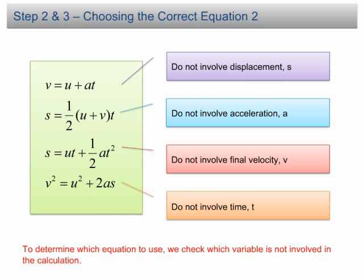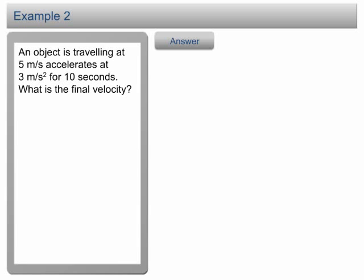Let's look at the example in the very next slide for a better understanding. Example 2. An object is travelling at 5 m per second accelerates at 3 m per second square for 10 seconds.